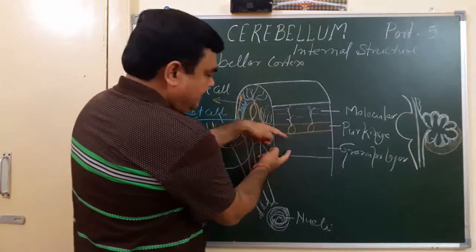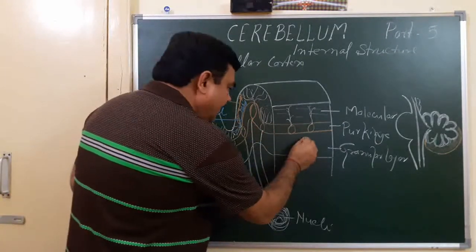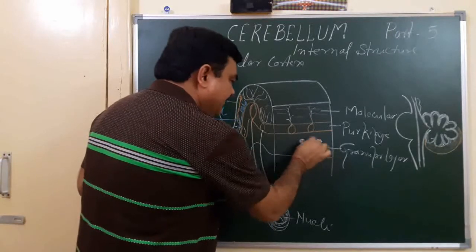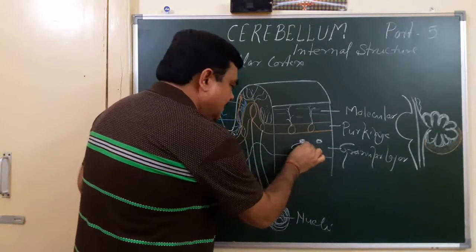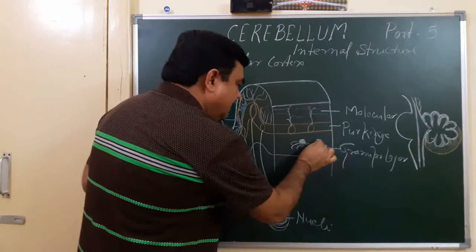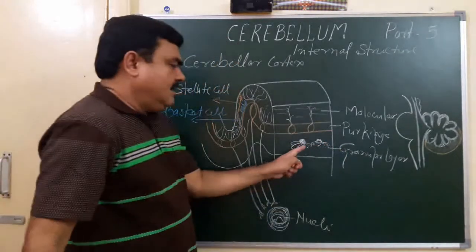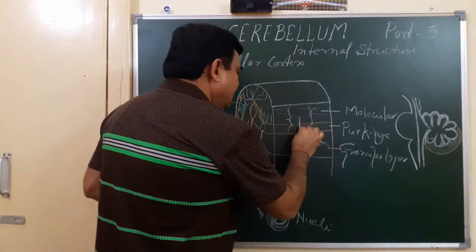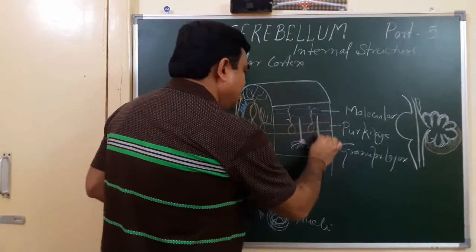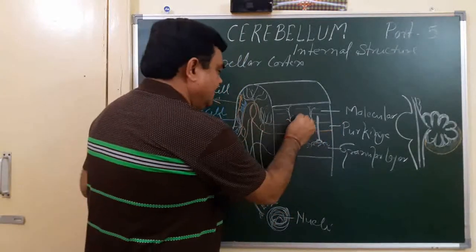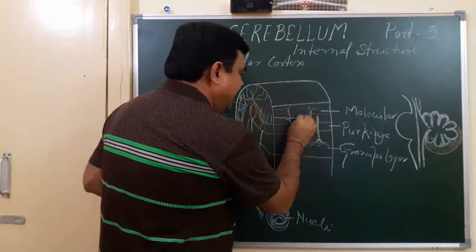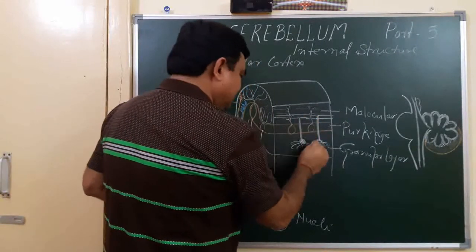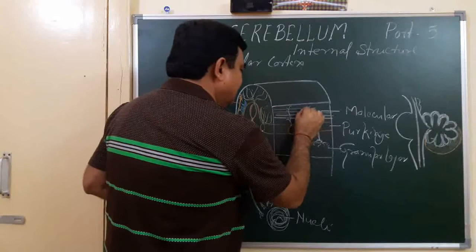Another layer is the granular layer. Here the granule cell body is present, with claw-like dendrites and an axon. This axon divides in a T-shaped manner and forms parallel fibers. So numerous parallel fibers are present, and these parallel fibers are actually the axons of the granule cells, whose dendrites are claw-like.